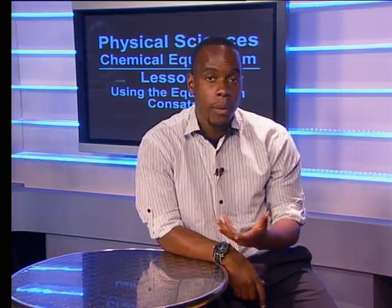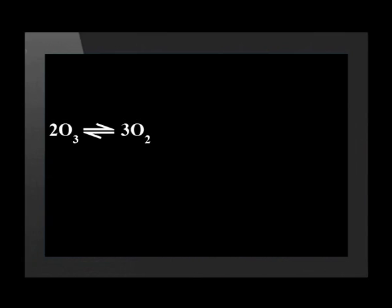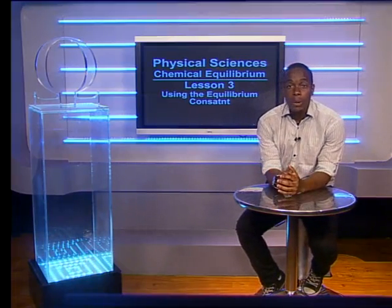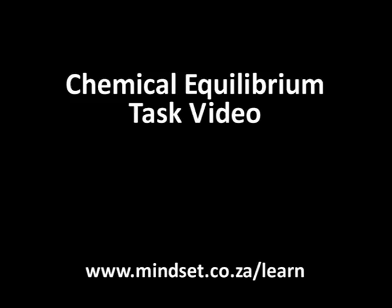Before we leave, let's summarize what it means when Kc is very high or very low. A very high Kc indicates the forward reaction is almost complete — for example, ozone (O₃) breaks up into oxygen very readily, with Kc = 10⁵⁵. A very low Kc means the forward reaction does not happen easily and the reactants are very stable — for example, HF does not easily break up. Please look at the chemical equilibrium task video and visit www.mindsearch.co.za/learn for more details. Take care and goodbye.